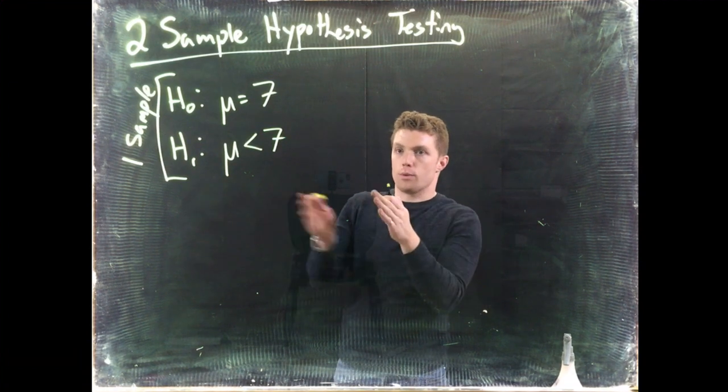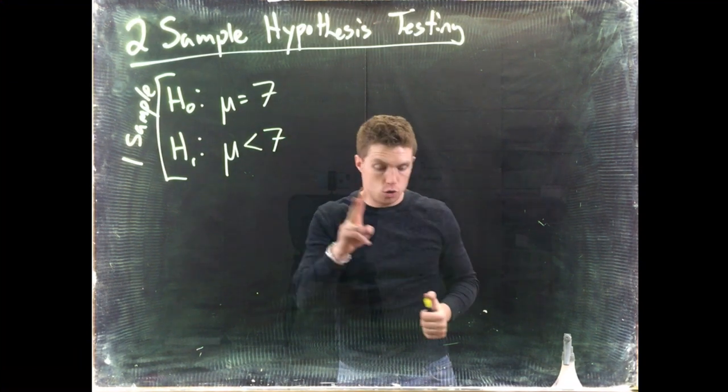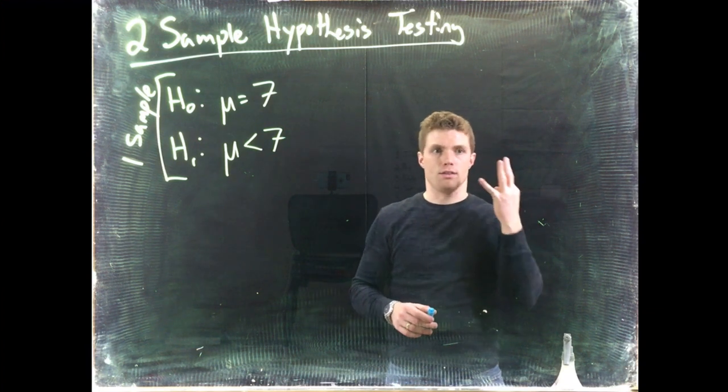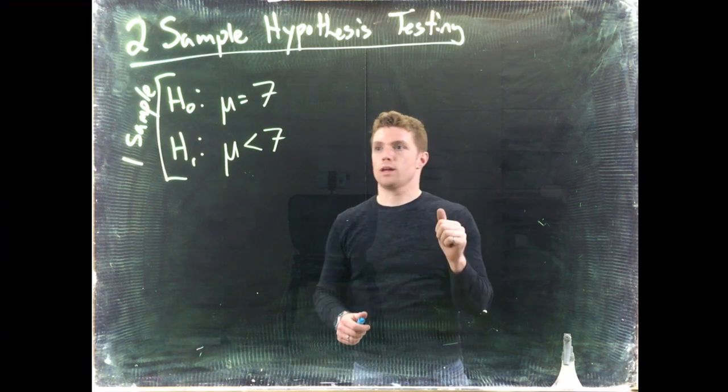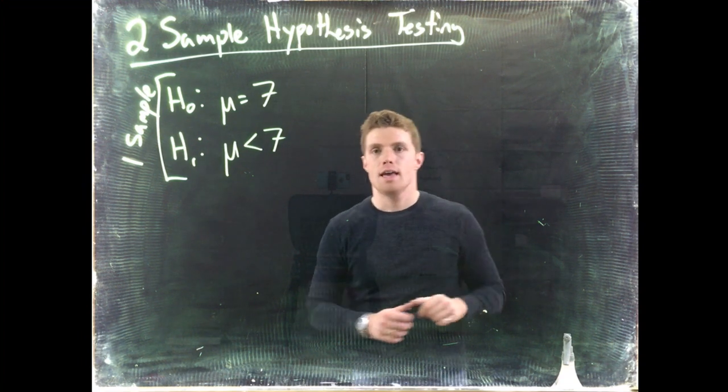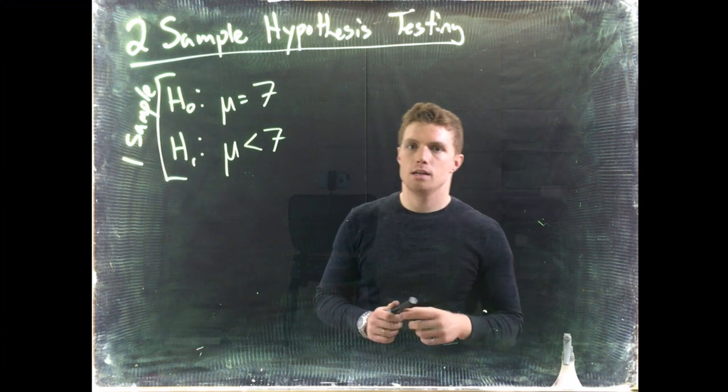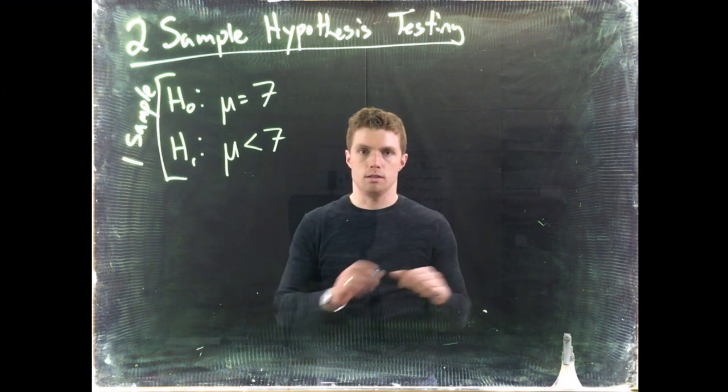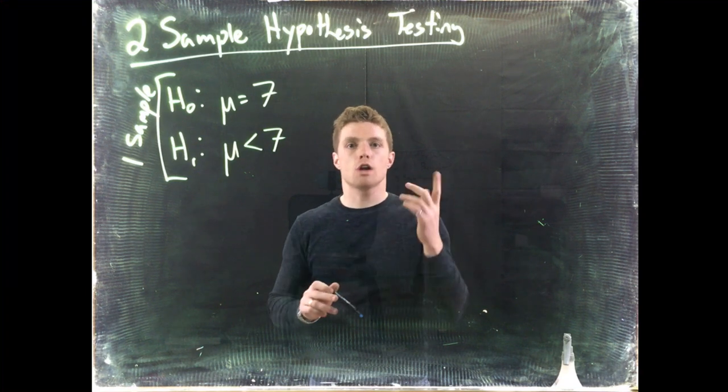Now let's go ahead and show how we're going to expand this to use two samples. There's going to be three different types because we have to handle proportions, we've got to handle matched pairs which is a little different, and then we also have to handle our two-sample independent tests of the means. So let's start off with matched pairs.